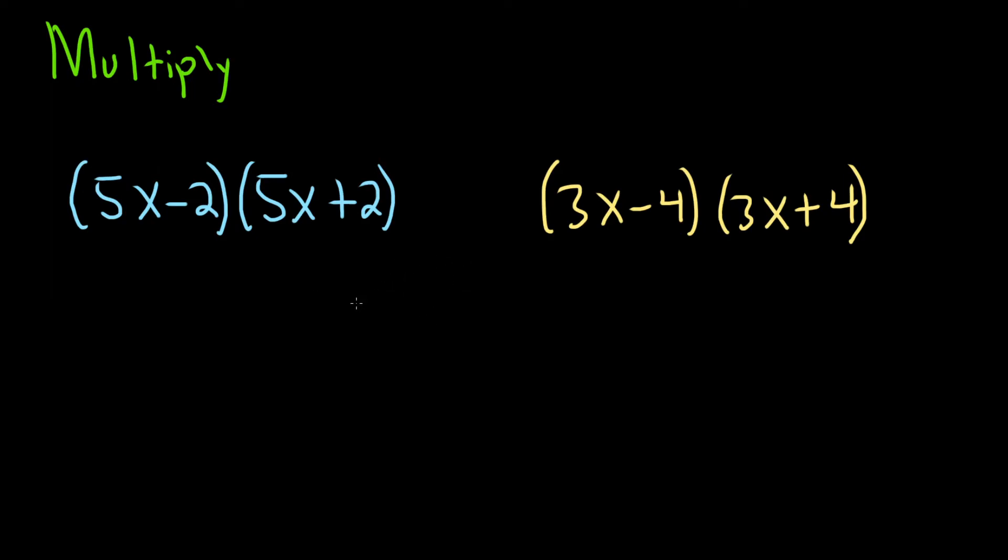In this problem we have two products of polynomials. We're going to use the difference of squares formula. The difference of squares formula says if you have (a-b) and you multiply it by (a+b), the result is a² - b².